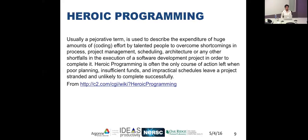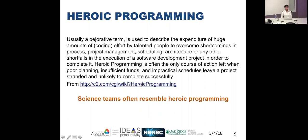Most people who start out in computational science begin with what is called heroic programming — doing whatever it takes to make a project work. This is defined as expenditure of huge amounts of coding effort by talented people to overcome shortcomings in process, project management, scheduling, architecture, or any other shortfalls in software development in order to complete it. Scientific teams often resemble heroic programming, and many do not see anything wrong with that approach.